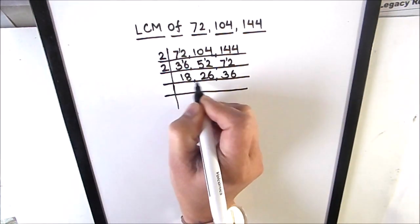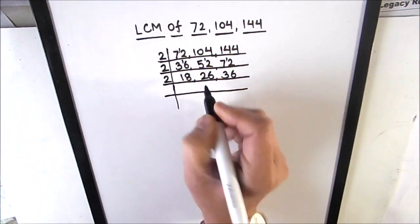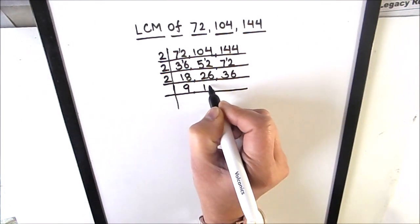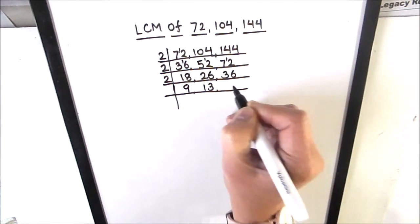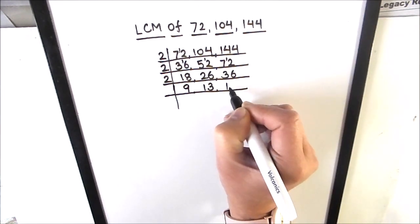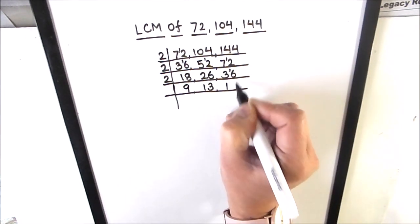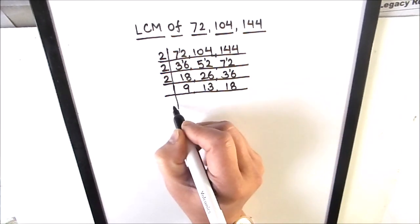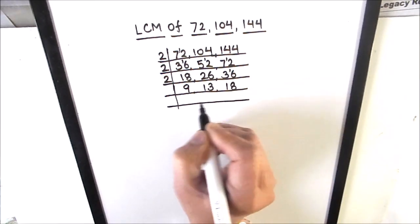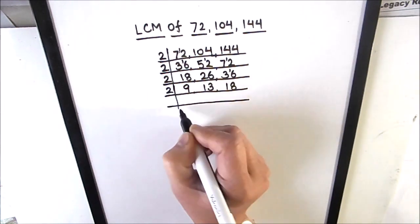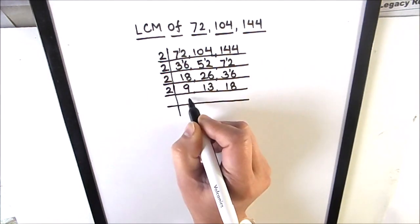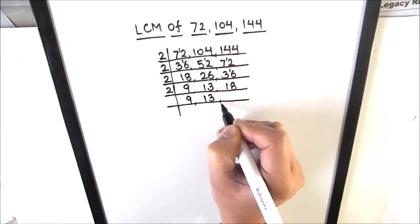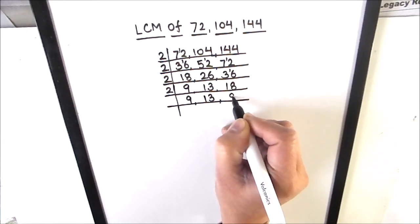All three numbers are even, so we will use 2 again. 2 times 9 is 18, 2 times 1 is 2, 2 times 3 is 6, 2 times 1 is 2, 1 is remainder this becomes 16 — 2 times 8 is 16. Now 18 is an even number so we will divide it by 2, and 9 and 13 are not fully divisible by 2 so we will write them as is. 2 times 9 is 18.